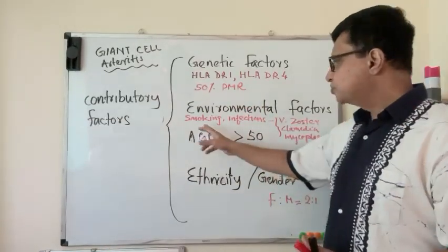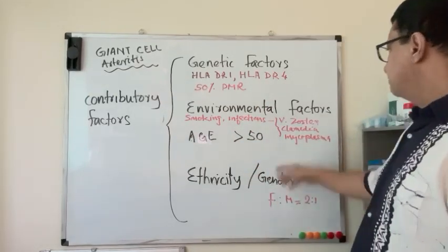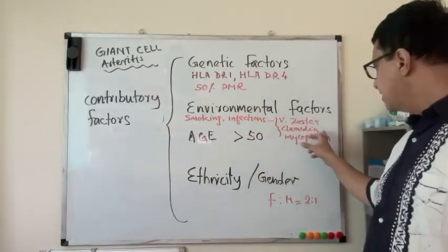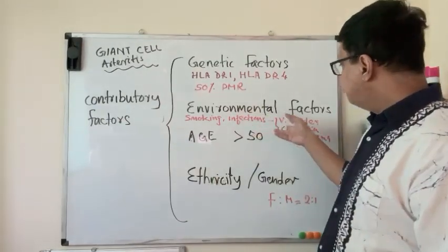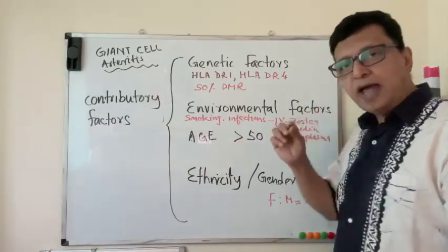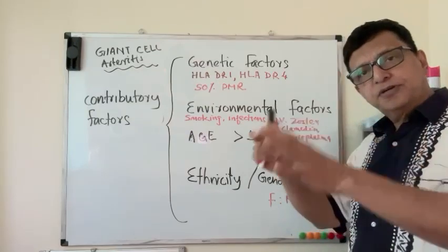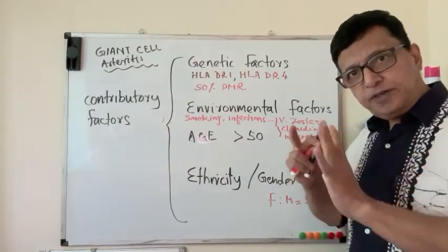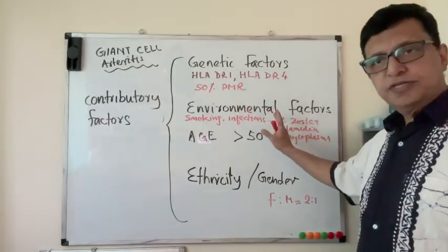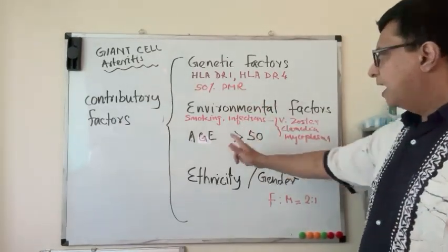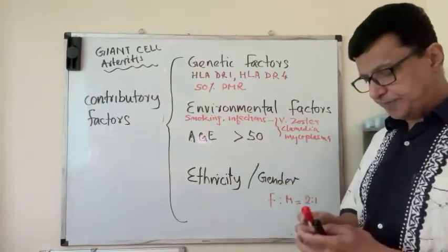Environmental factors: smoking and some infections are suggested, for example Varicella, Chlamydia, and Mycoplasma. They have found in the biopsies that Varicella and Chlamydia antibodies are present in the granulomatous infiltration of these giant cells in the arteries.